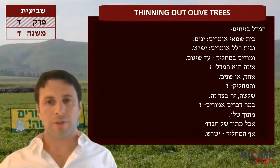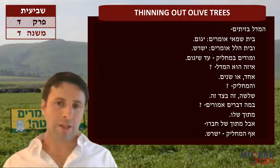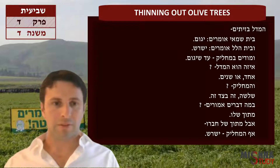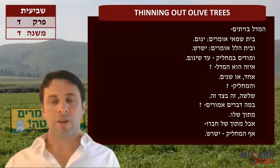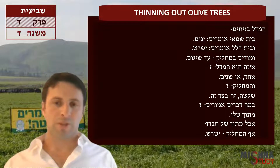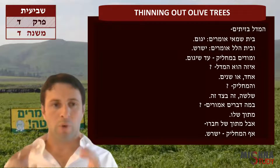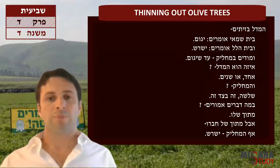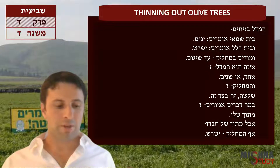So what are you allowed to do when it comes to these zetim? Ha-medel ba-zetim — we'll explain what medel means. Medel literally means to thin out, from the word dal. So you're thinning out the zetim, the olive trees. Beit Shammai says yagom, and Beit Hillel says yashoresh. We'll see later on in the Mishnah how many trees you're removing when you're thinning out. Beit Shammai says yagom — yagom literally means to chop it, to cut the tree.